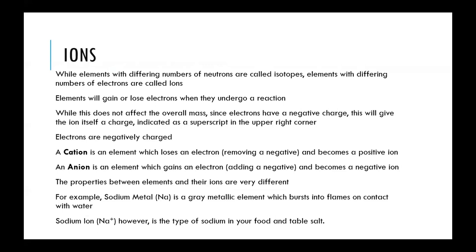The last point I'm going to touch on is ions. While isotopes are elements with varying numbers of neutrons, an ion is an element with varying numbers of electrons. Whenever an element undergoes a reaction, typically it's always with the electrons. All chemistry other than nuclear chemistry occurs with the electrons moving back and forth or being shared between different elements, and sometimes even completely leaving or attaching to a different element, creating these ions.